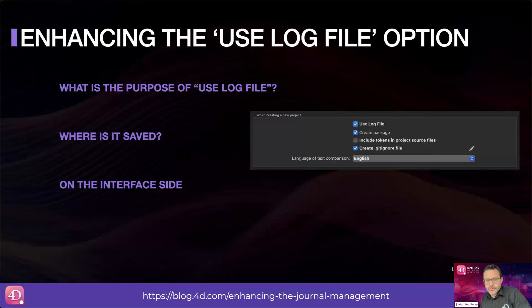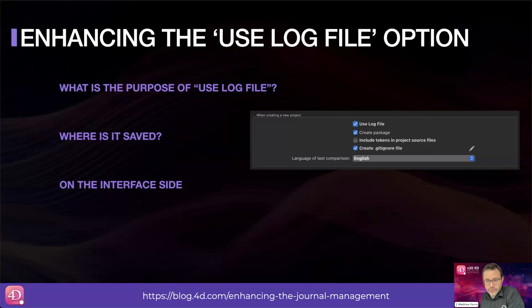The use log option is saved by default in the catalog file. However, with 4D v20 R3, you can now modify this option during deployment using the backup parameter file. You can place this parameter next to the structure or next to the data. In practical terms, this allows you to define a differentiated log policy between your development environment, where you might prefer to work without a log, and your production or client's production environment, which requires a log.